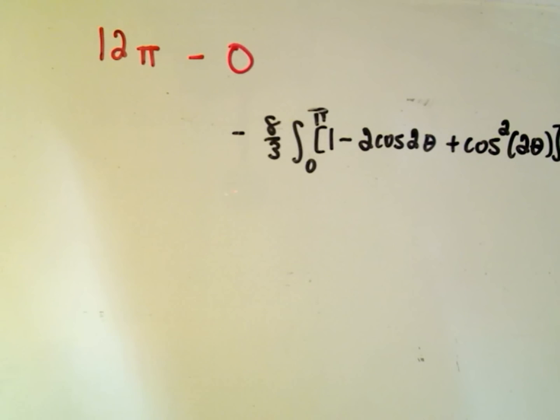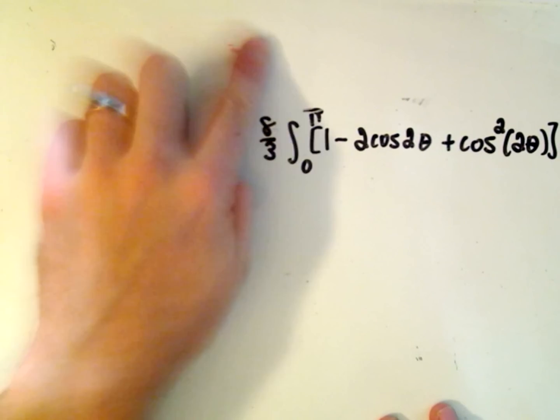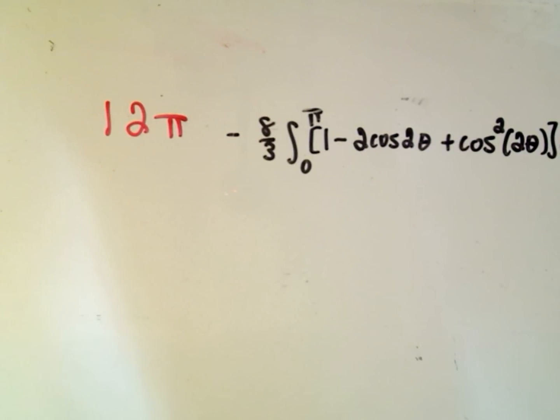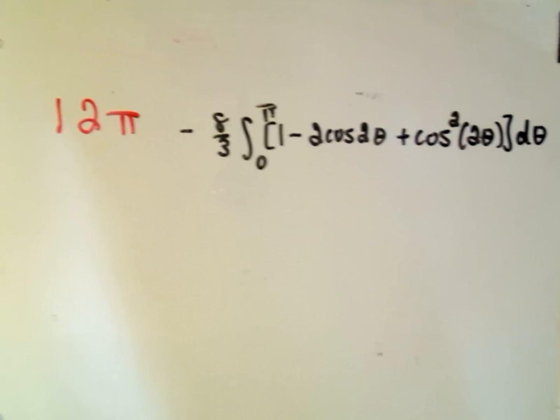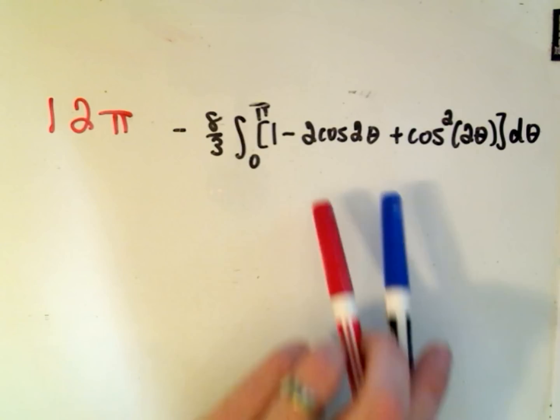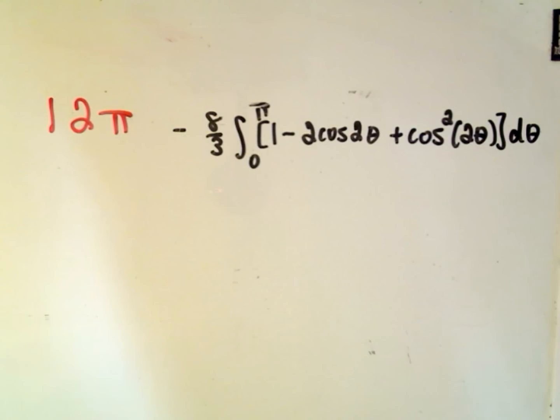And now the last thing we have to do is, so we basically are just left with 12π minus this stuff. So we'll have to calculate this integral as well. And I think what I'm going to do, I'm going to do one last video and finish off this integral because I don't want to run out of time.